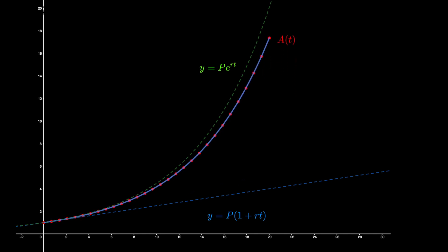As the number of periods increases, we start to see diminishing returns, and the graph approaches the exponential curve P e to the r t.